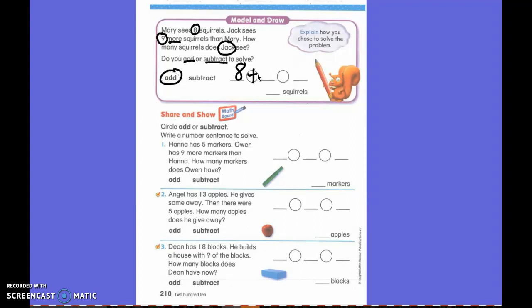Why nine? Because I read it near my story and said nine. 8 plus 9. What do I put here? Very good. 8 plus 9 equals 17. So how many squirrels did Jack see? 17.